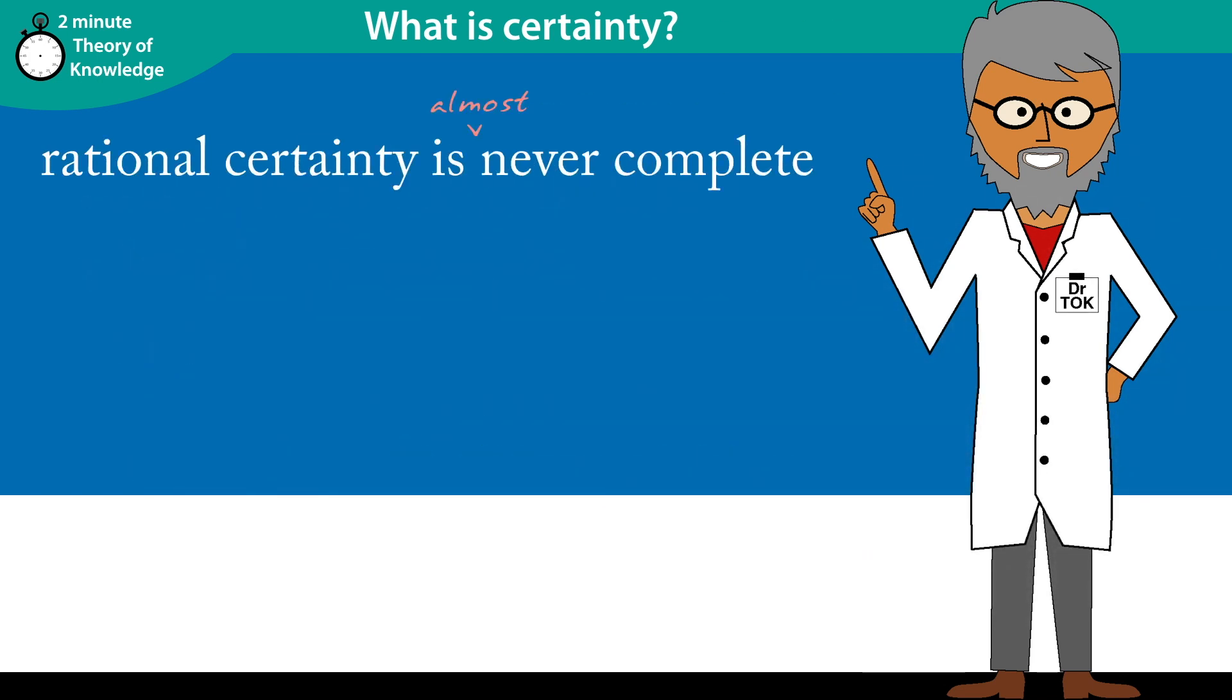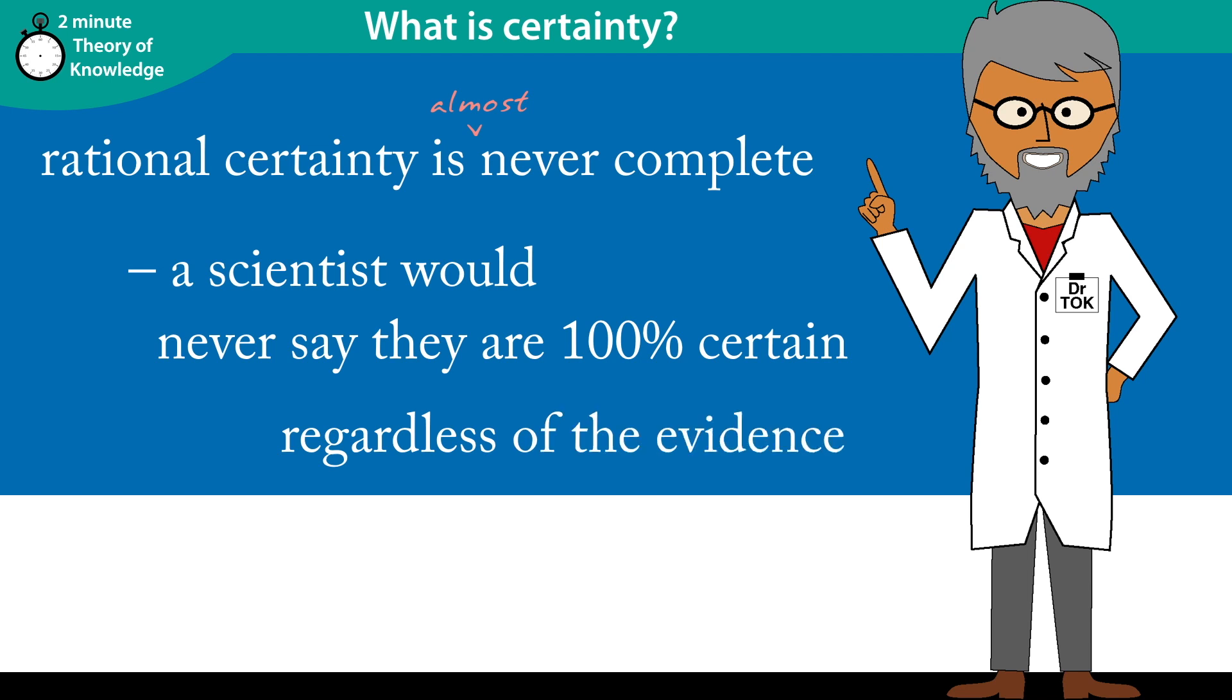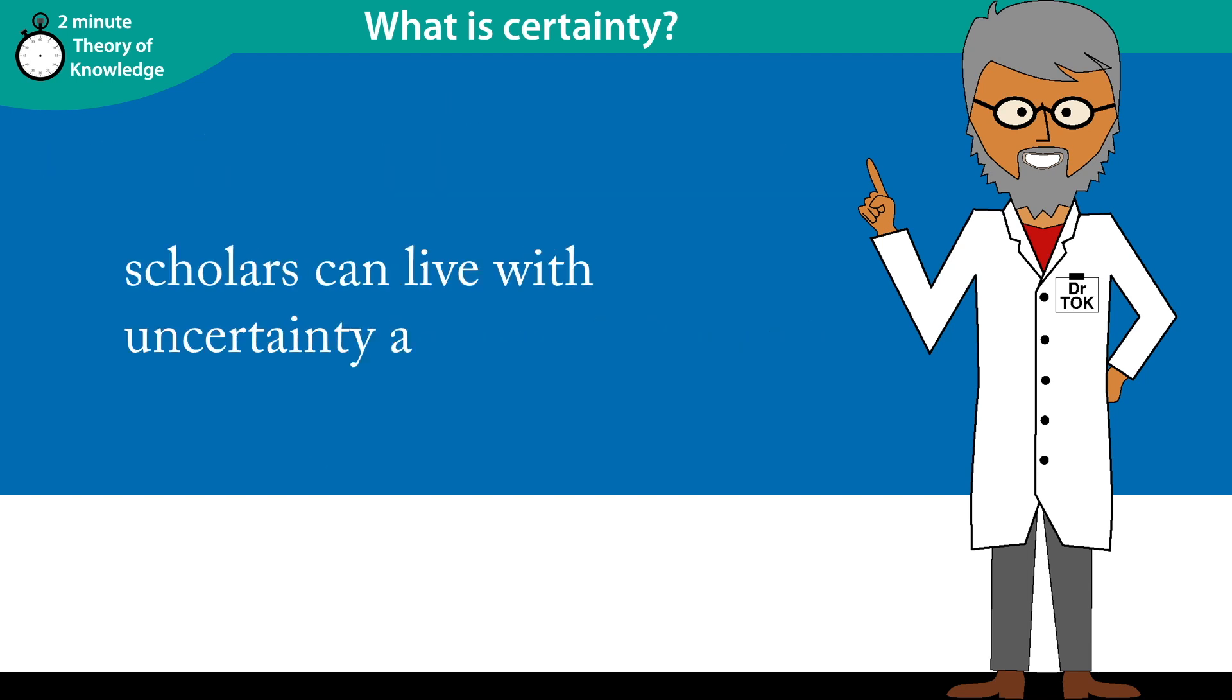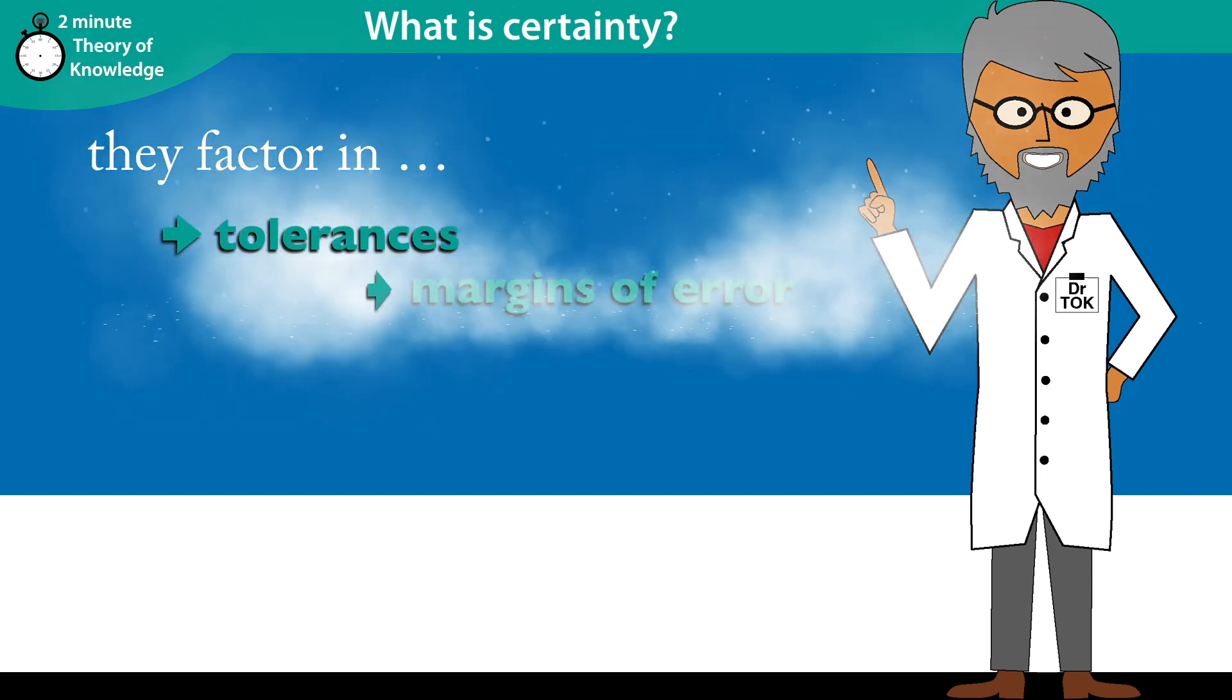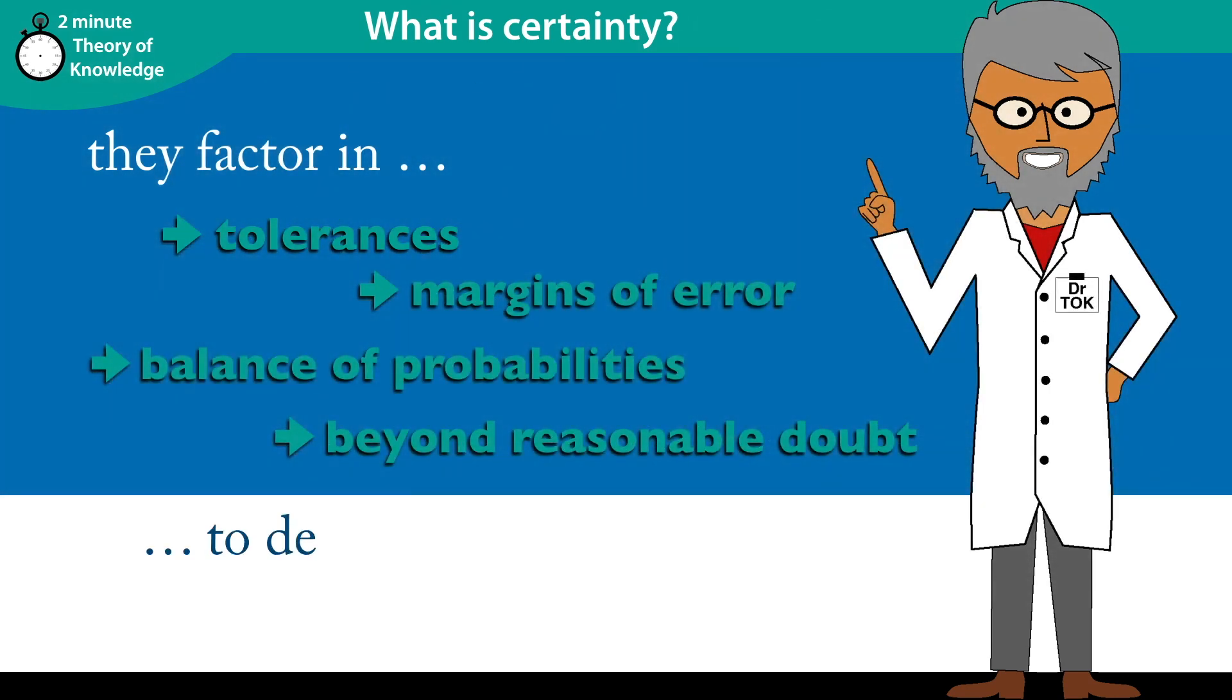And rational certainty is almost never complete. A scientist would never say they are 100% certain of any scientific conclusion, regardless of the amount or quality of evidence. Scientists and other scholars can live with uncertainty, as long as they know how uncertain. They factor in tolerances, margins of error, and so on, to strictly define the extent of any uncertainty.